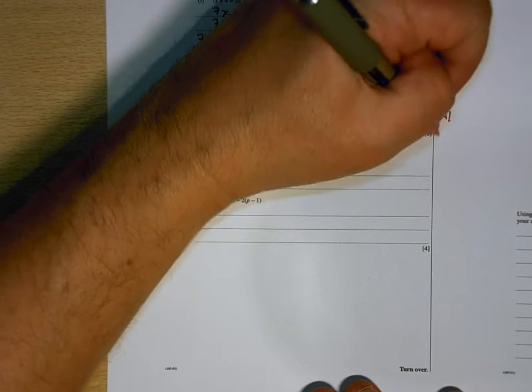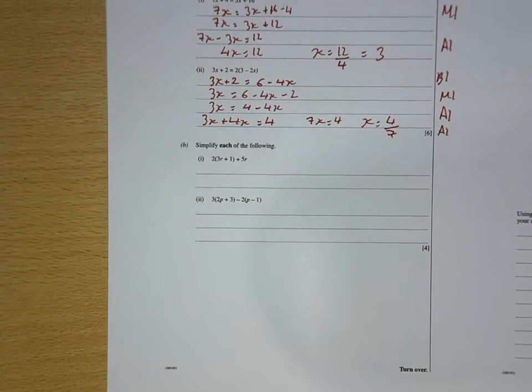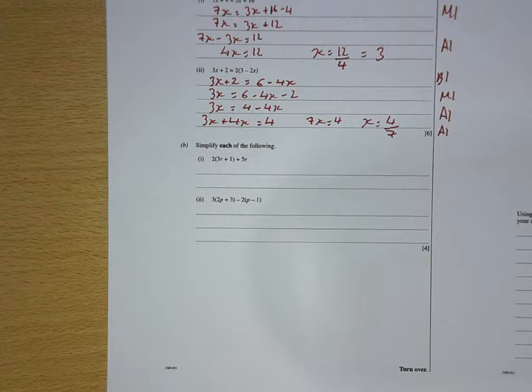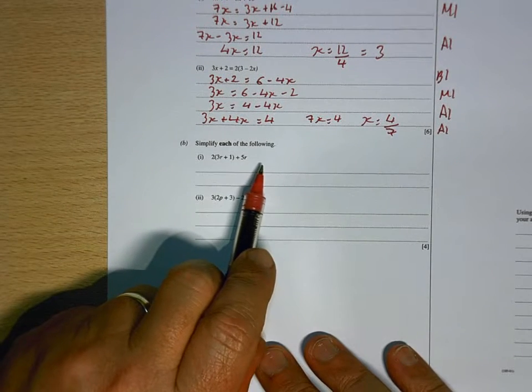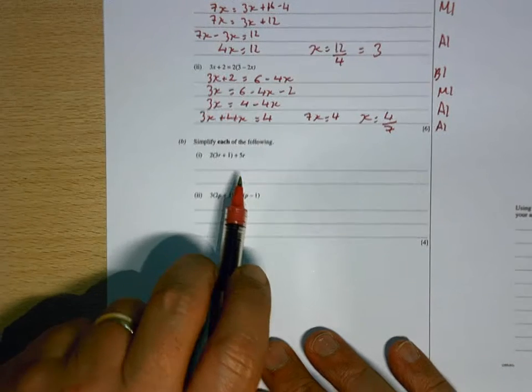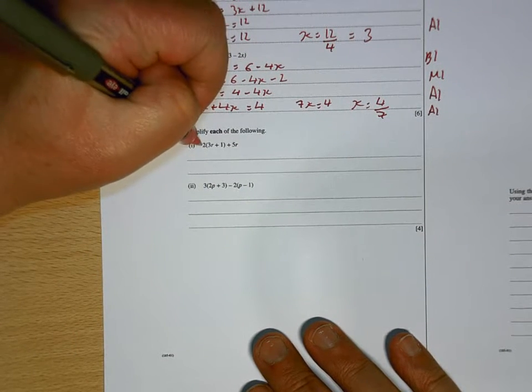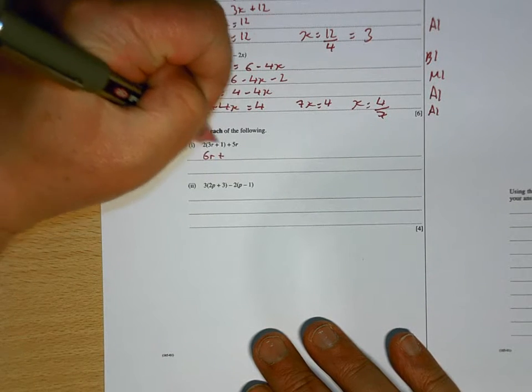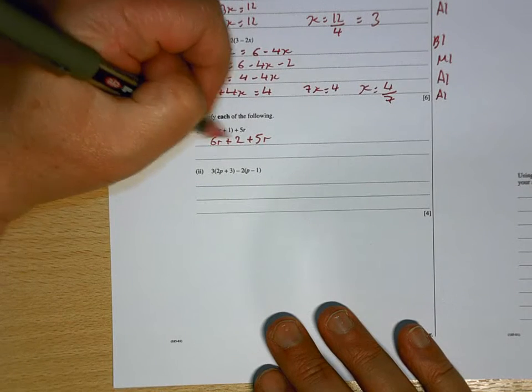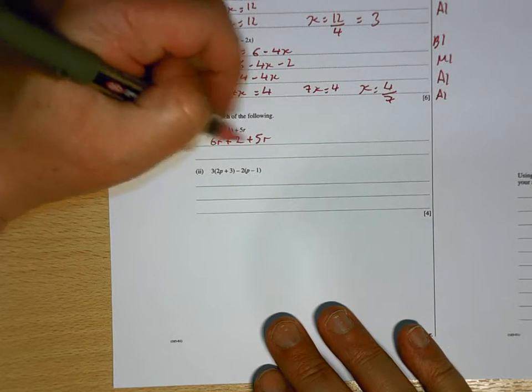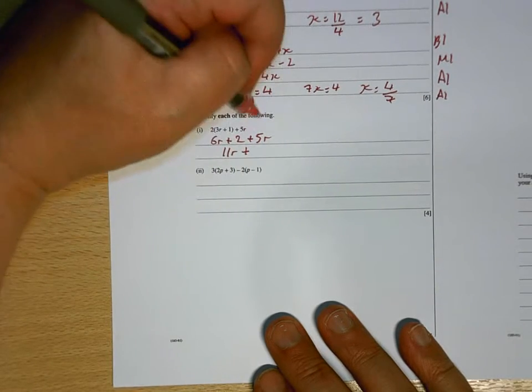And 1 mark for getting it as a fraction. And then, for B, simplifying. So, there's no equals here. So, we're not going to get an answer. It's just going to be something that we can tidy up. So, first of all, multiply out the bracket. 2 times 3R is 6R. 1 times 2 is 2 plus 5R. I can add up the R's. 6R and 5R is 11R plus 2. So, there'll be 1 mark for that one.